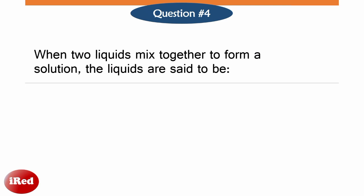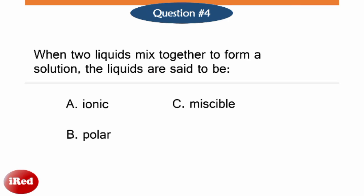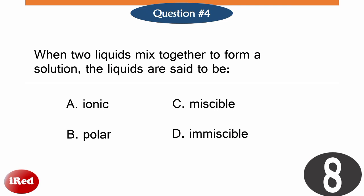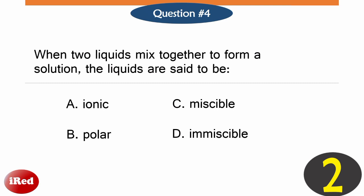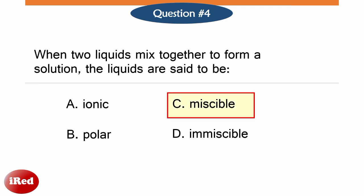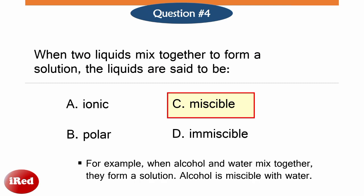Number 4. When two liquids mix together to form a solution, the liquids are said to be: A ionic, B polar, C miscible, or D immiscible. The answer is miscible. For example, when alcohol and water mix together, they form a solution — alcohol is miscible with water.